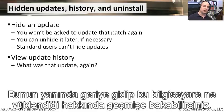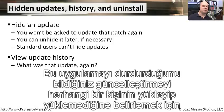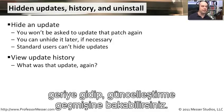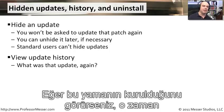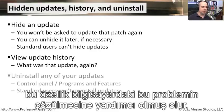You can also go back and look at the update history — what was installed on this computer. If you're trying to run an internal application and it keeps failing, you might wonder whether a particular update that breaks that app was installed. Going back to the update history lets you see if that patch was installed, which helps you resolve troubleshooting problems on that computer.